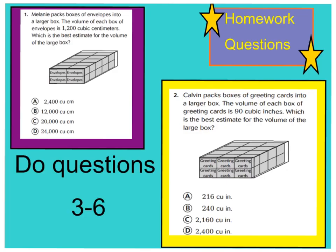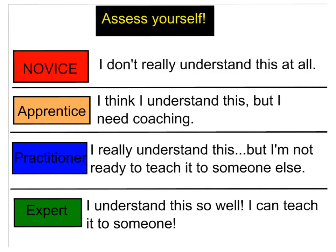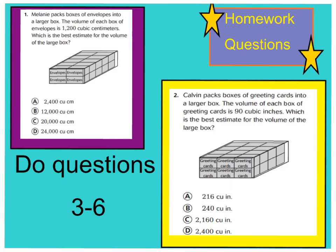Your homework tonight is to answer questions 1 and 2 on your own. Use the formula that I've taught you. Then do questions 3 through 6 for your spiral review of what we've learned throughout this year. Don't forget to assess yourself: level 1 novice, 2 apprentice, 3 practitioner, 4 expert. We will practice this some more tomorrow to become experts in class. Have a great night. Bye-bye.